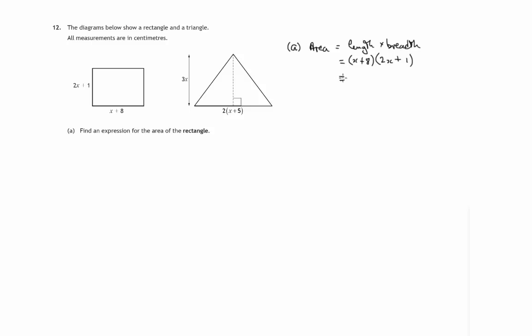Now we might as well multiply this out using firsts, outsides, insides. Firsts: x times 2x is 2x squared. Outsides: 2x times 1 is x.